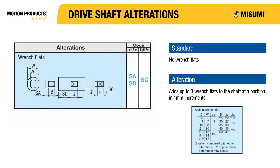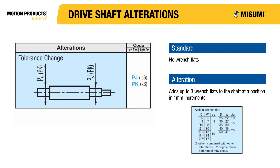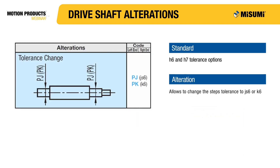This alteration adds up to three sets of wrench flats anywhere on the shaft in one millimeter increments, following the same dimensional criteria as rotary shafts. Misumi offers standard drive shafts in H6 or H7 tolerance, commonly used in slight clearance or slight push fit. Typically, a stronger press fit is recommended for direct coupled shafts to prevent slipping during high torque applications, and you can alter your shaft fit with this alteration code.